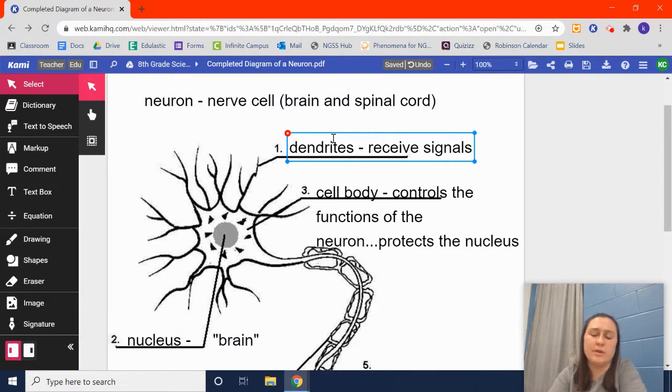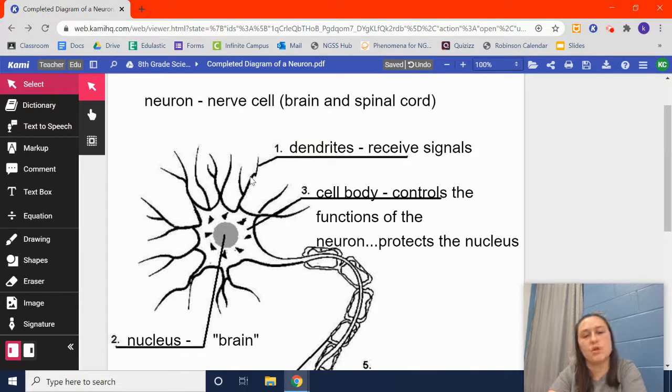If my hand touches a hot stove, the dendrite receives a signal. The signal travels down through the dendrite, through the cell body, into the nucleus. The nucleus processes that signal and says, oh gosh, this is hot. We do need to move the hand from the burner before bad things happen. The nucleus processes that signal, and then it shoots it out through here.